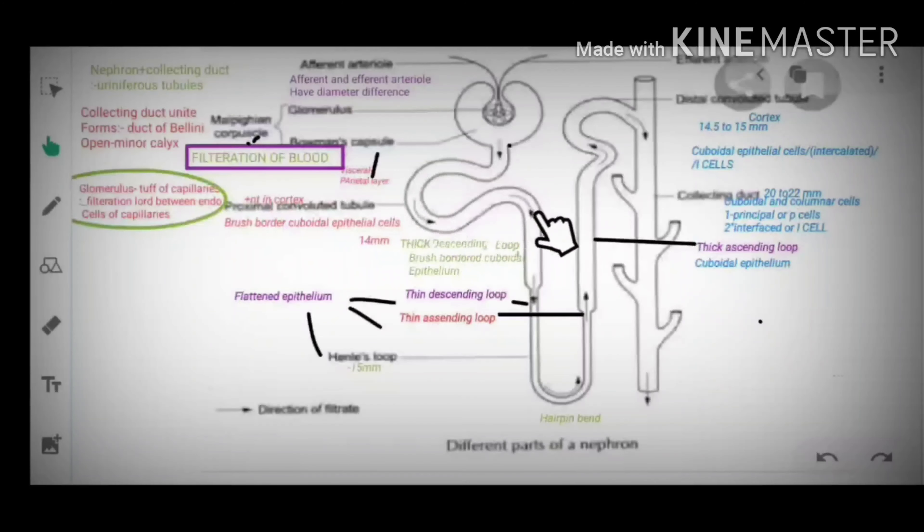Now, tubular portion of kidney. First, the very first tubular portion of kidney is PCT, proximal convoluted tubule. Then comes thick descending loop of Henle.